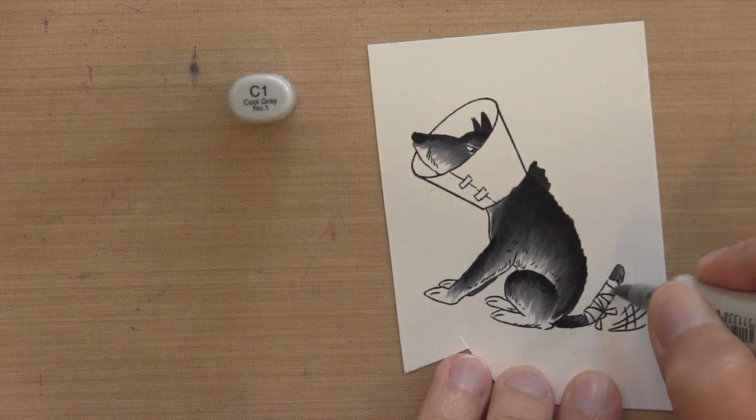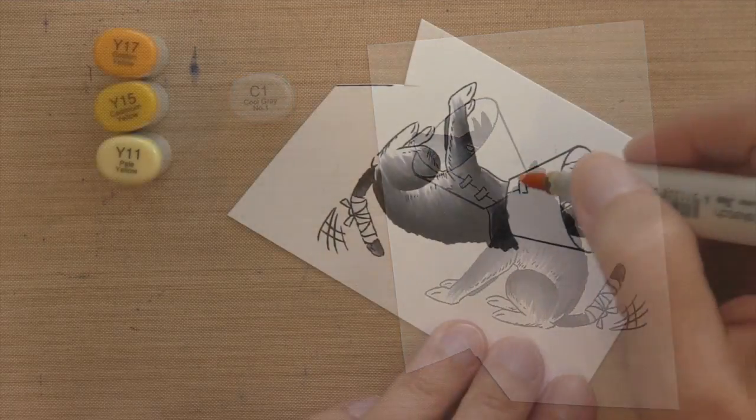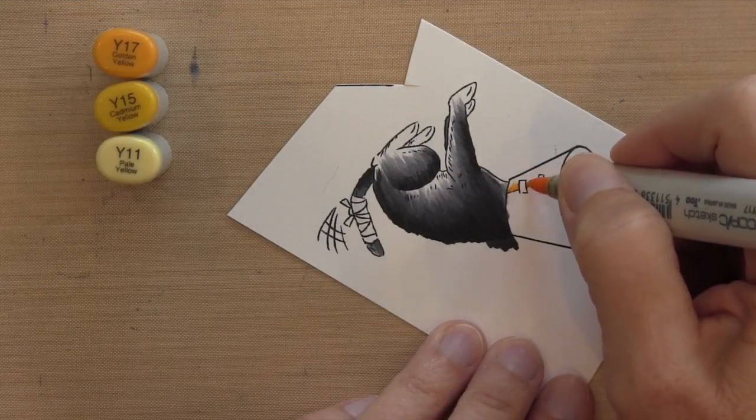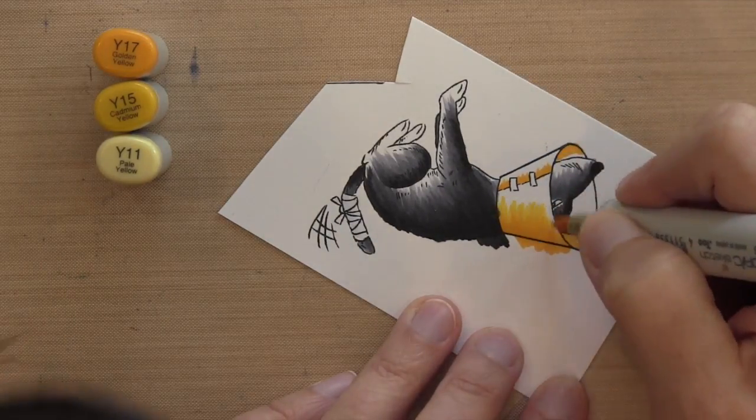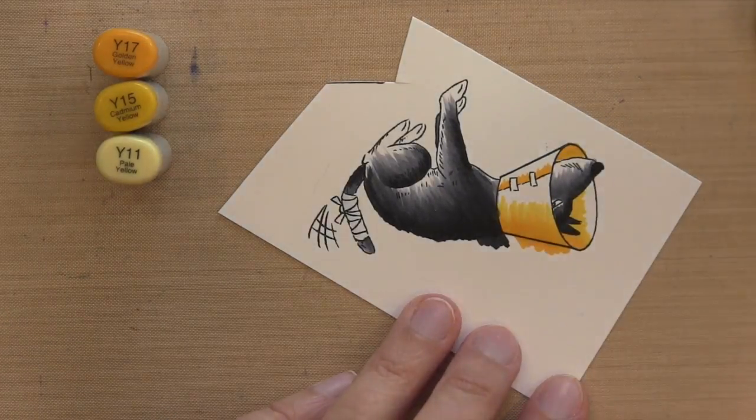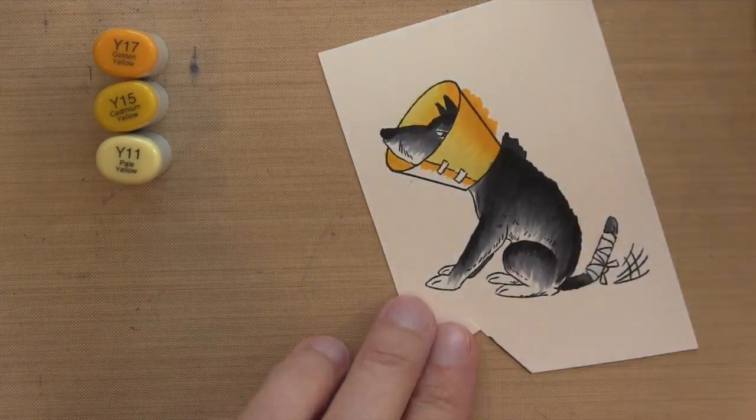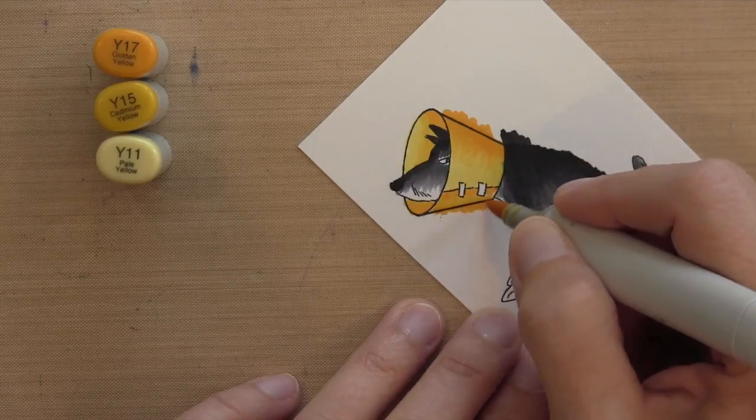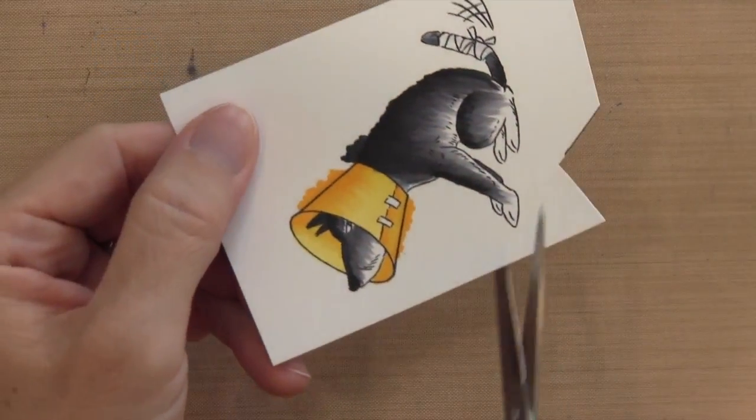And then for the bandage, I just wanted a little bit of shadow, so I just take a C1 and do the edges just a little bit. For the cone, I'm using my three favorite yellow colors. I'm coloring it the same way with the flicking. I'm just going to do 17, 15, and then when I do the 11, I'm going to do it from the opposite side so my blending flicks will kind of run together.